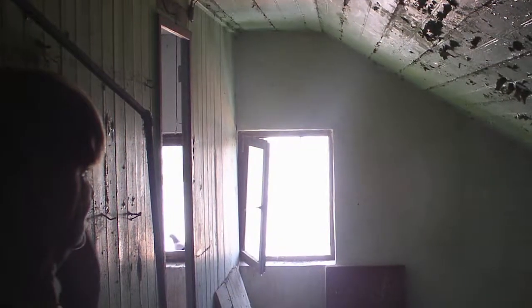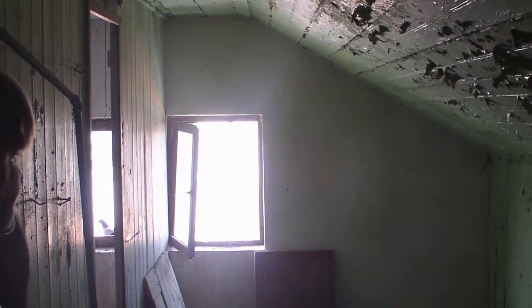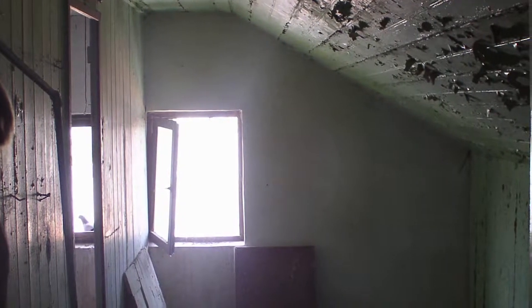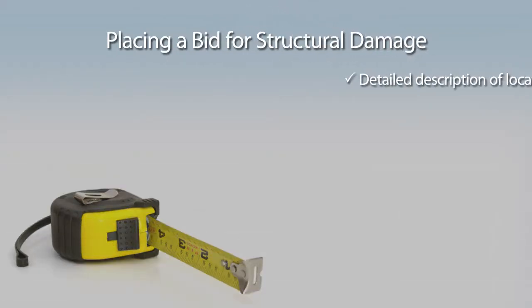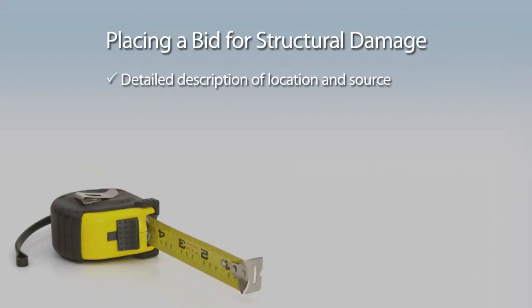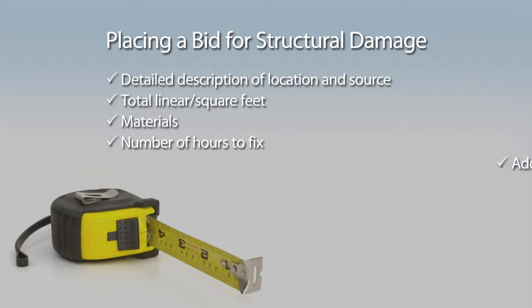If damage is found at the property, provide a detailed estimate to repair. The source of the damage must also be properly identified to prevent the damage from worsening or occurring again once repaired. When placing a bid, include the following information: a detailed description of the damage location and source of damage, total linear or square feet, necessary materials, number of man hours needed to fix the damage, and any additional equipment needed.